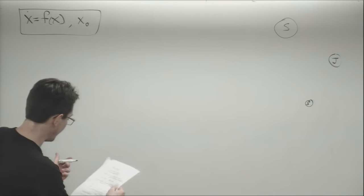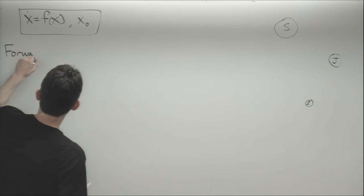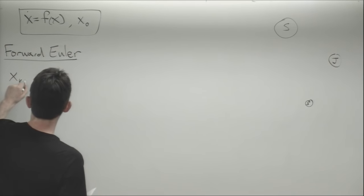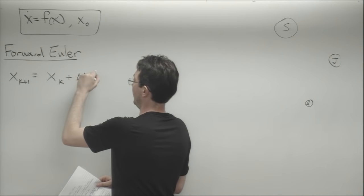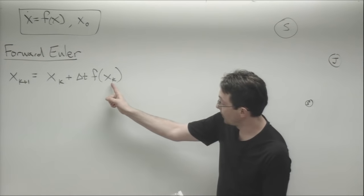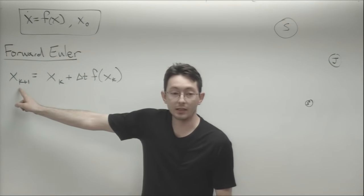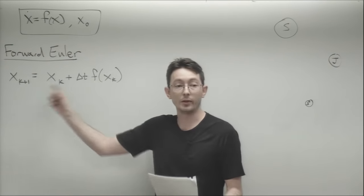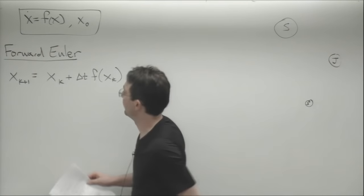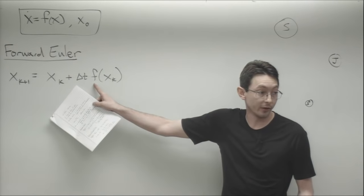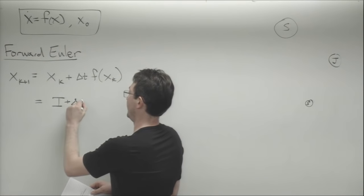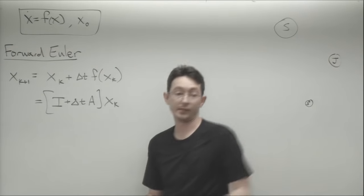A review of what we did last time. We had two schemes. Forward Euler — it's Euler, not Euler — is x_{k+1} equals x_k plus delta-t times f of x_k. I choose a time step, take my state at time t_k, and advance it to t_{k+1}, which is delta-t in the future, repeating over and over to define a numerical trajectory. For a linear system x-dot equals Ax, this becomes: identity plus delta-t times A, times x_k.